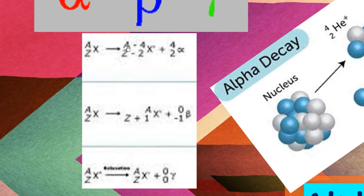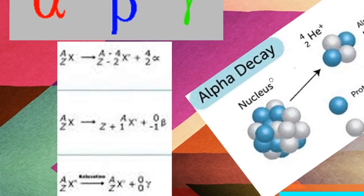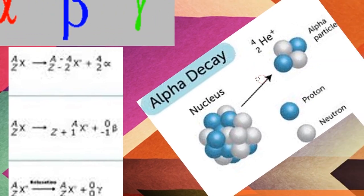During alpha decay, a new element is formed whose Z decreases by two units, A decreases by four units, and an alpha particle is emitted. Symbolically, it is shown like this.